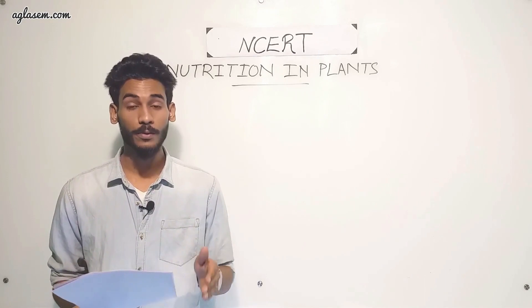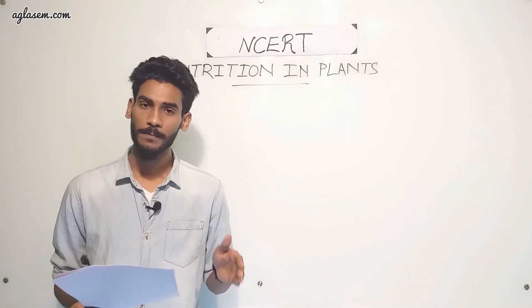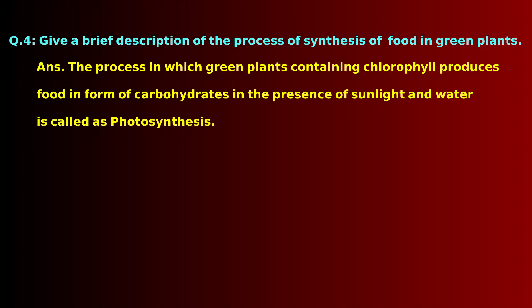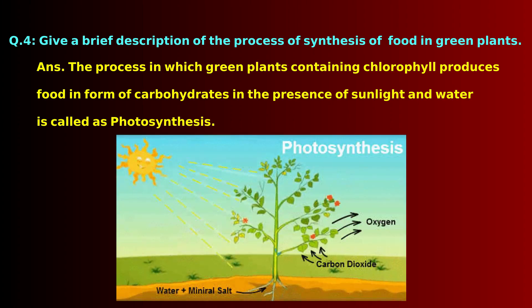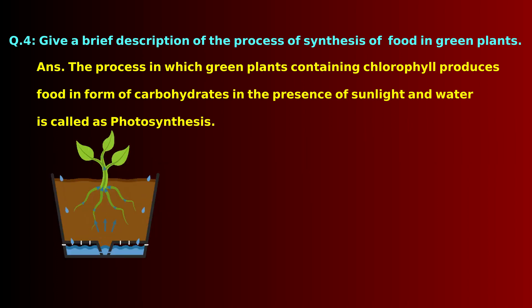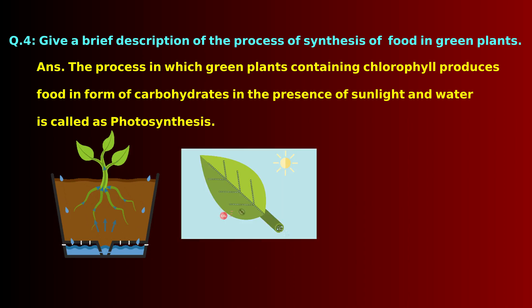Photosynthesis is defined as the process in which chlorophyll-containing plant cells synthesize food in the form of carbohydrates using carbon dioxide and water in the presence of sunlight. The raw materials required are water, taken in from the roots and transported to the leaves, and carbon dioxide from the air, which enters the leaves through tiny pores called stomata and diffuses to the cells containing chlorophyll.